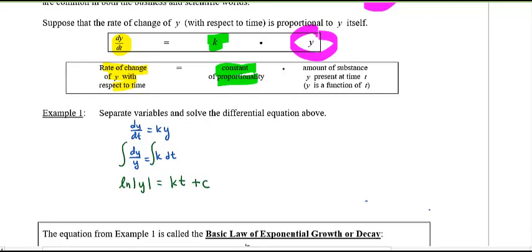Now you might be thinking I want to solve for y. So we need to then e both sides to solve for y. What you will see then is you get the absolute value of y equals e to the kt, and I'm going to write this as e to the kt times e to the power of C. Two exponents being added together I can separate that into two powers, so e to the kt times e to the C.